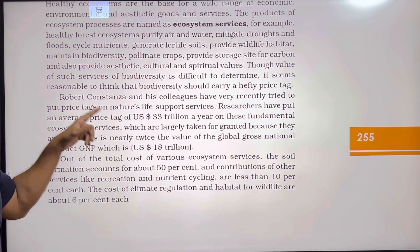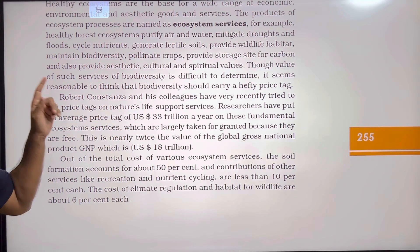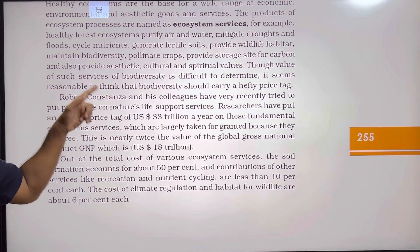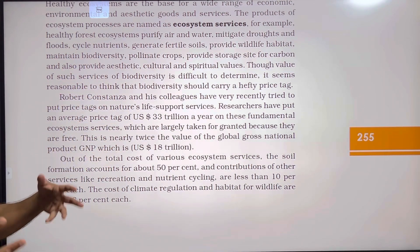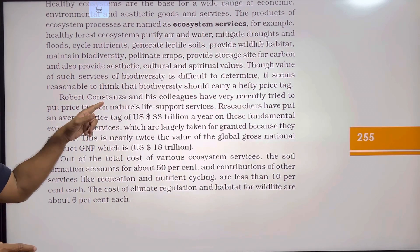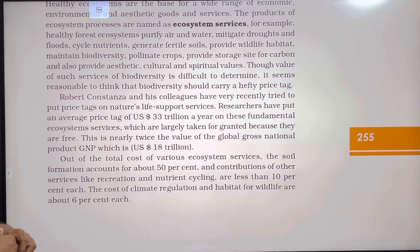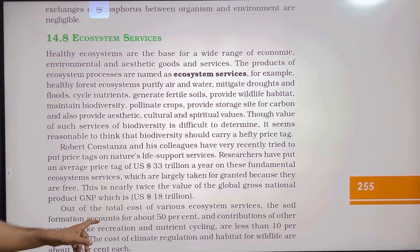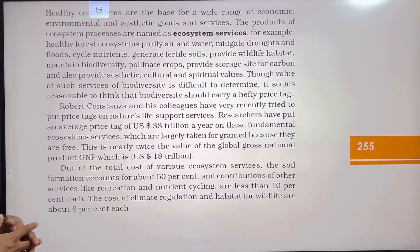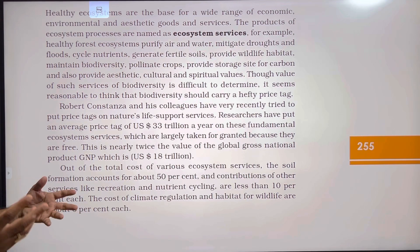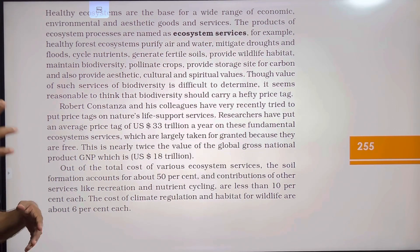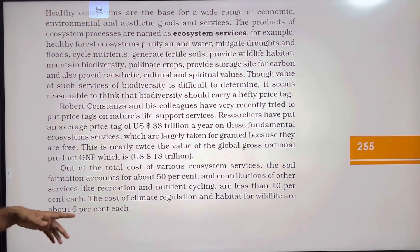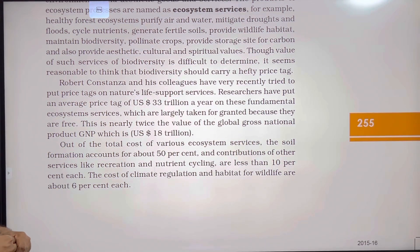Robert Costanza and his colleagues tried to put price tags on nature's life support services. Researchers have put an average price tag of US $33 trillion per year on these fundamental ecosystem services, which are largely taken for granted because they are free. This is nearly twice the value of the Global Gross National Product, which is $18 trillion US dollars.